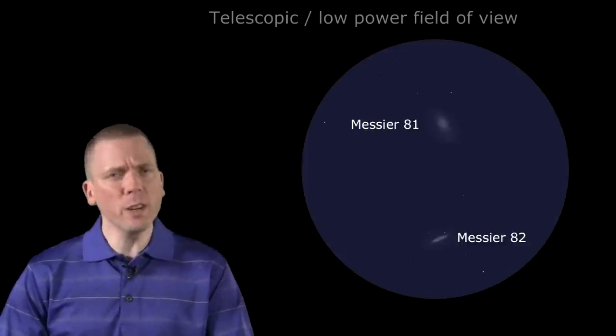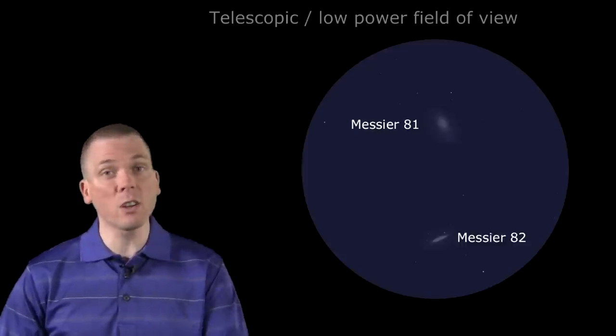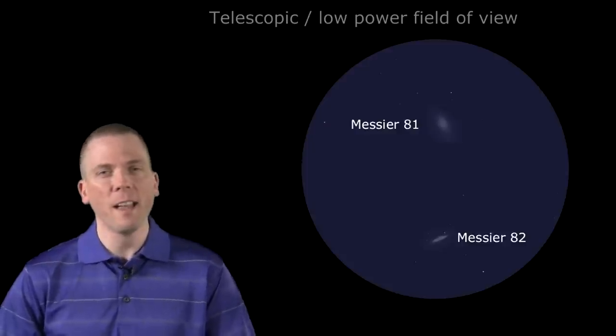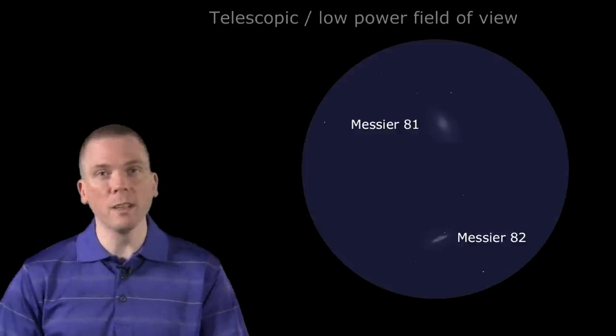M82 is a starburst galaxy, furiously birthing new stars in star clusters near its core, at 10 times the rate of our galaxy. M81 is a bit more of a sedate spiral. Both are galactic neighbors to each other, and not too far relatively from our own Milky Way, at about 12 million light years distance.